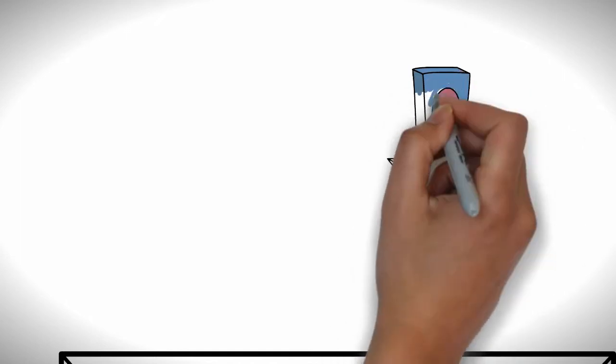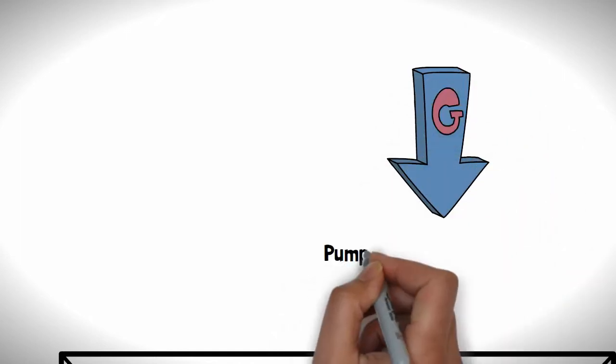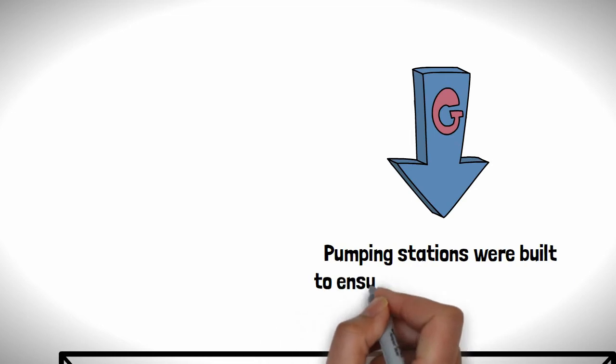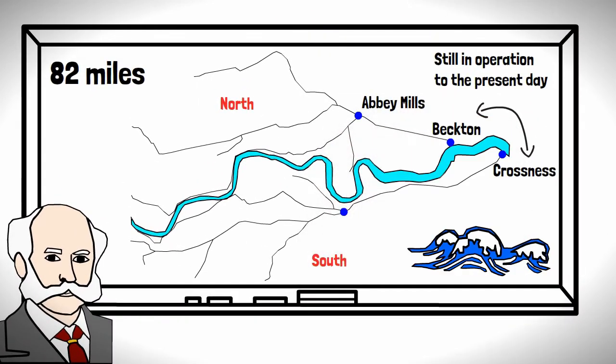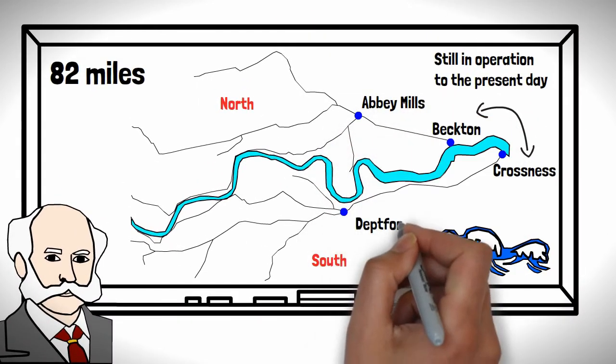The system would mostly fall by gravity, but in areas where this wasn't possible, pumping stations were built to ensure the sewage could be moved to a higher level. For the northern sewer, a pumping station was built at Abbey Mills, and in the south it was at Depthly.